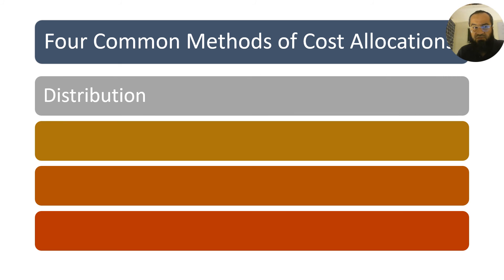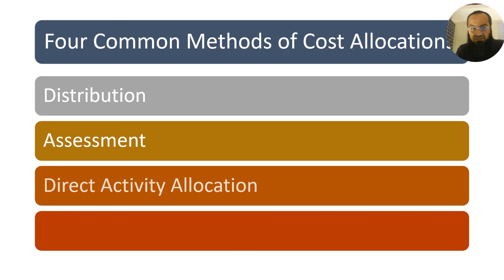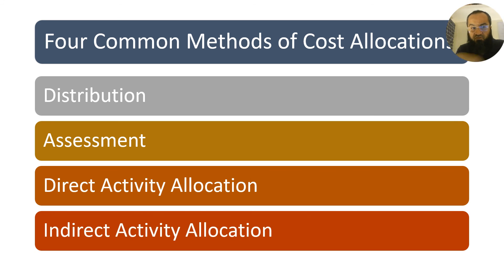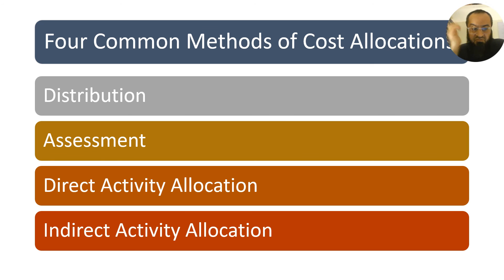There are four methods that SAP cost center accounting offers for stage one cost allocation. The first is known as distribution, the second is assessment, the third is direct activity allocation, and the fourth is indirect activity allocation. One important point to keep in mind is that SAP is vocabulary intensive — it has its own specific vocabulary, sometimes with multiple names for the same concept or different meanings for common terms.